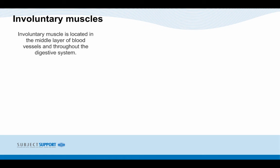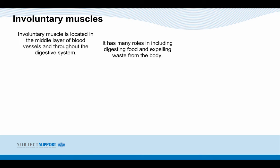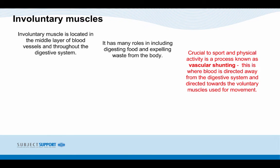Involuntary muscles are located in the middle layer of blood vessels and throughout the digestive system. They have many roles including digesting food and expelling waste from the body. Crucial to sports and physical activity is a process known as vascular shunting, where blood is directed away from the digestive system and directed towards the voluntary muscles used for movement.